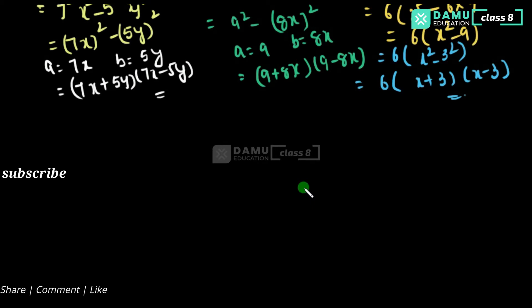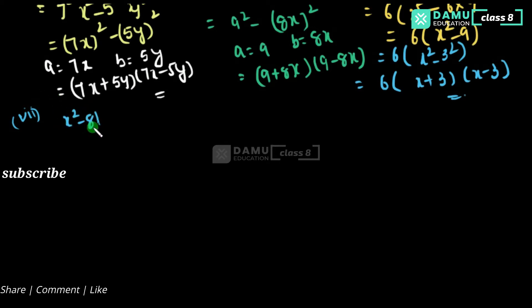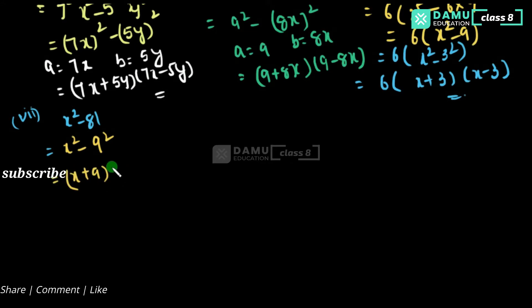The seventh one is x squared minus 81. Write x squared minus 9 squared, since 81 is 9 squared. That gives x plus 9 into x minus 9.